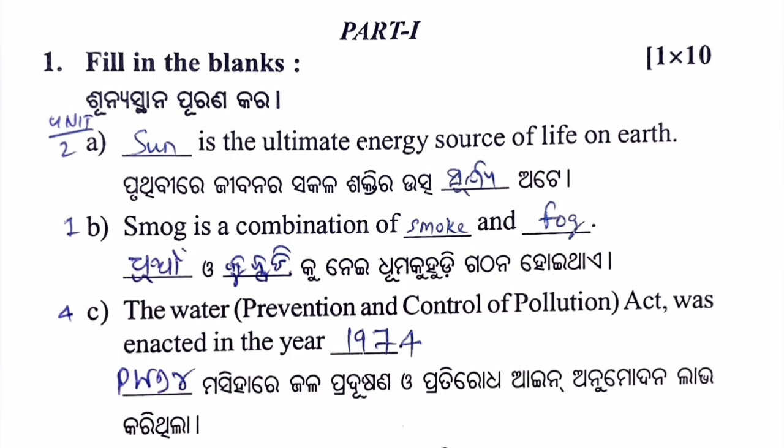Fill-in-the-blank: The Sun is the ultimate energy source of life on Earth — Unit 2. Smog is a combination of smoke and fog — Unit 1, air pollution. The Water Prevention and Control of Pollution Act was enacted in the year 1974.